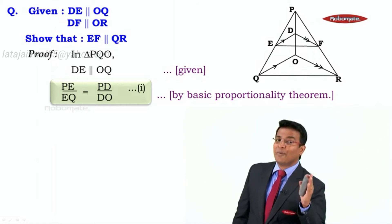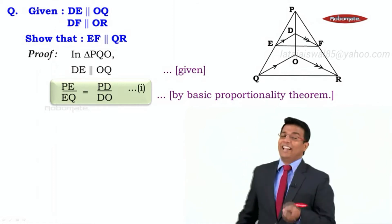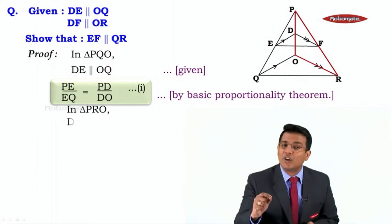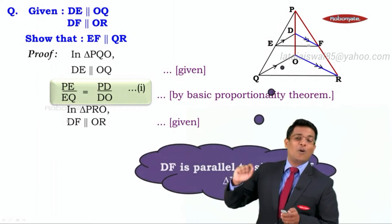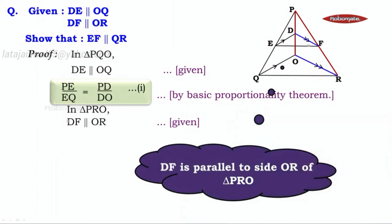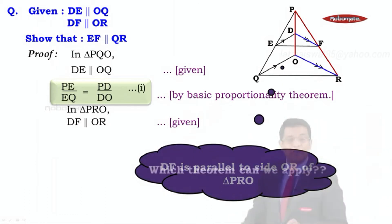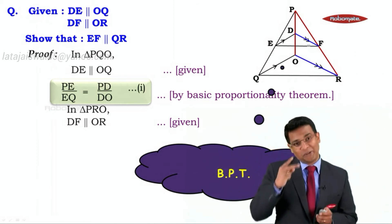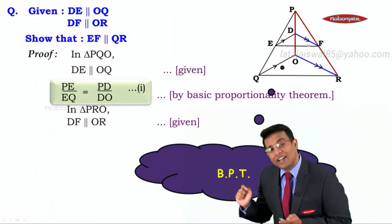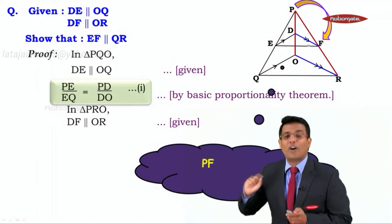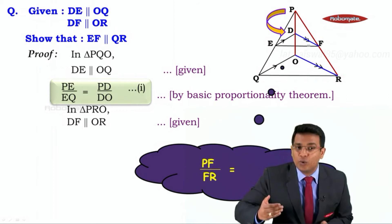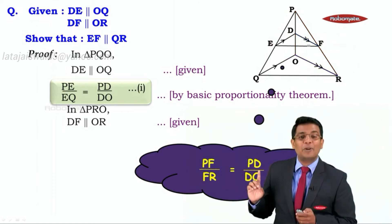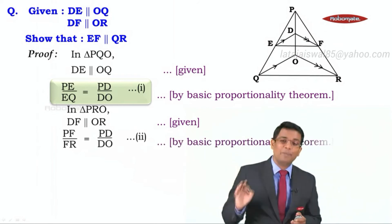The other ratio we need is PF upon FR. To get that, we consider the second given information: DF is parallel to OR, which is in triangle PRO. In triangle PRO, DF is parallel to side OR. So again we apply BPT, giving us PF upon FR equal to PD upon DO. This is our statement number two, by the Basic Proportionality Theorem.